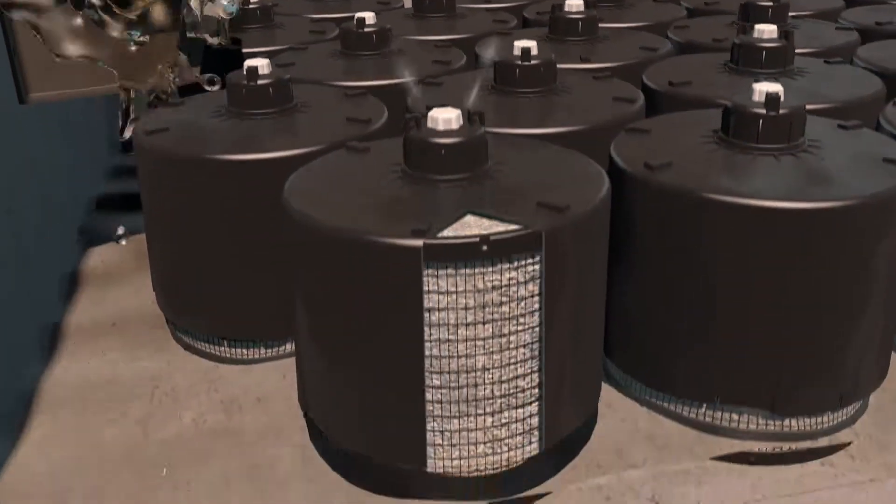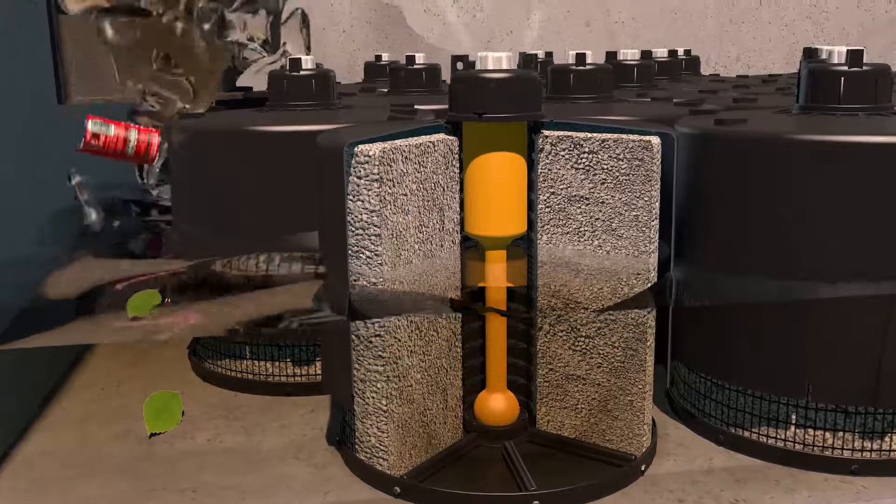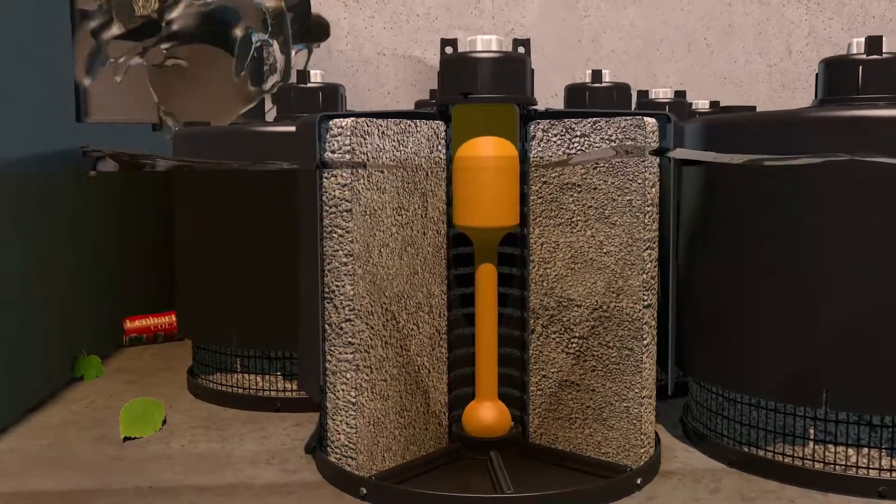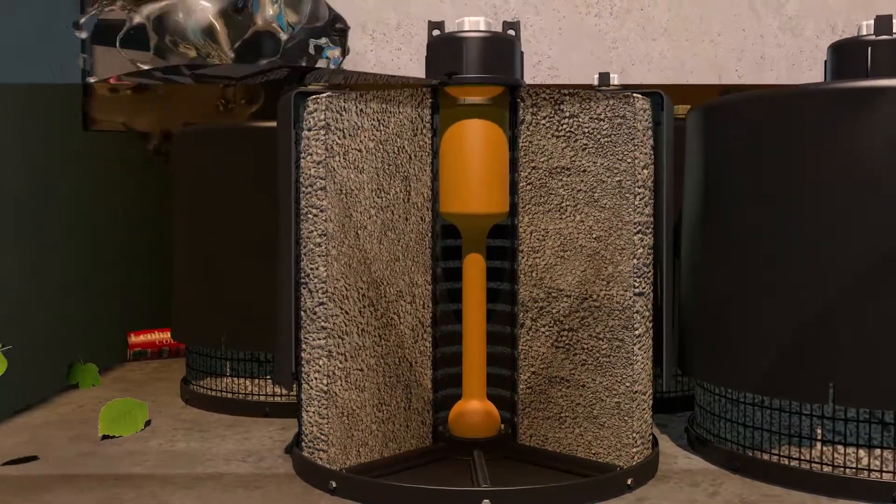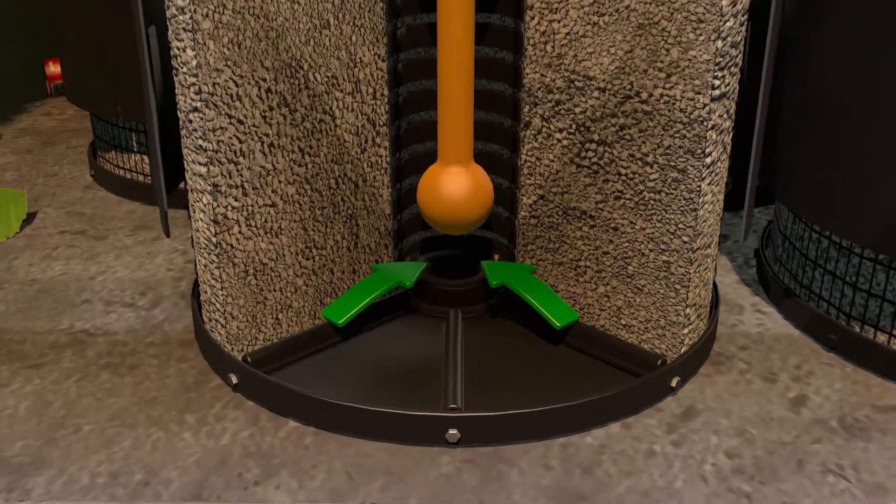Stormwater passes through the filtration media and begins filling the cartridge's center tube. When water reaches the top of the cartridge, the float valve opens and filtered water is allowed to drain at the design flow rate.